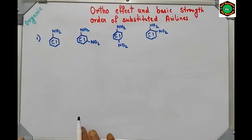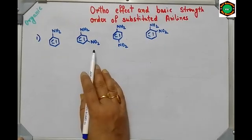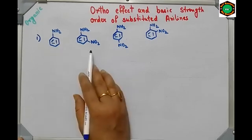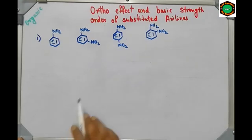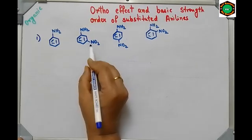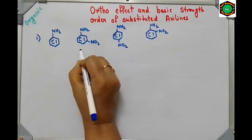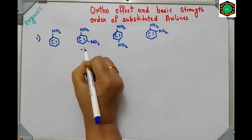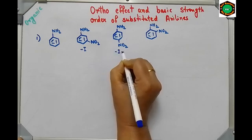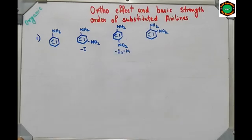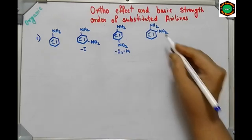Now compare the basic strength: aniline, meta-nitroaniline, para-nitroaniline, and ortho-nitroaniline. The nitro group at meta position has no resonance effect — only −I effect operates. At para position, both −I and −M effects operate. At ortho position, −I, −M, and the ortho effect — three effects are present.